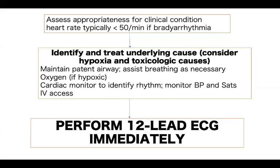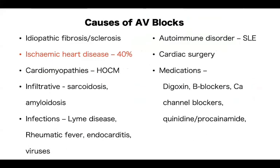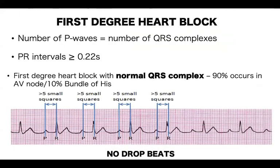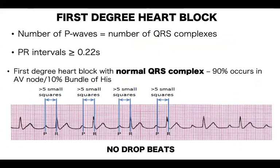Perform a full 12-lead ECG immediately in these patients. As a general rule, it is important to screen for common conditions: calcium channel blockers and beta-blockers are readily available and many people have access to these drugs through family members' antihypertensive treatments, so people can simply overdose on them. We need to have an index of suspicion for this.